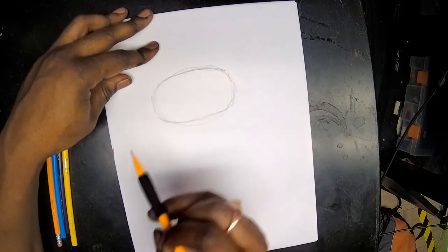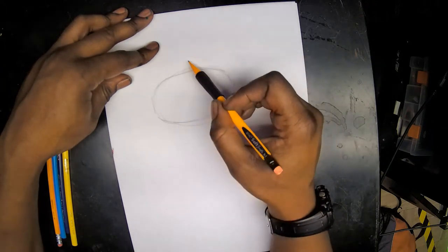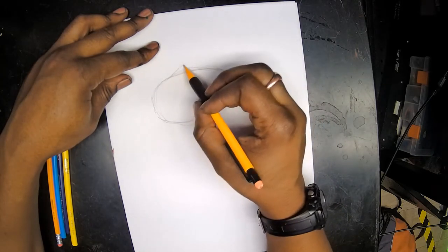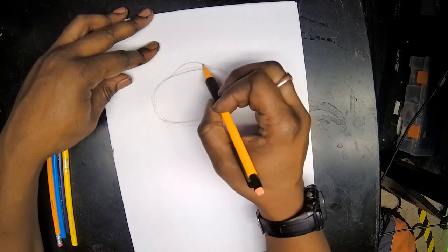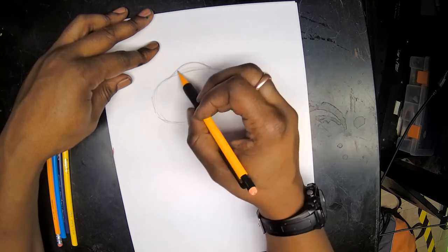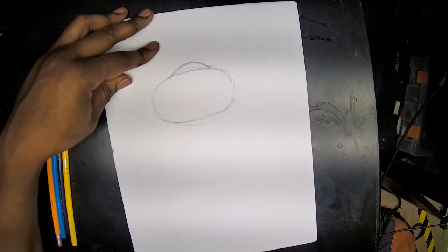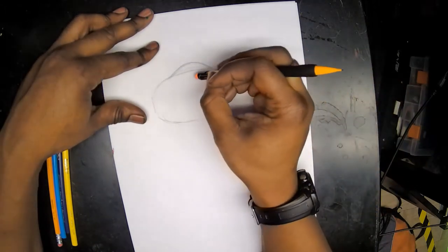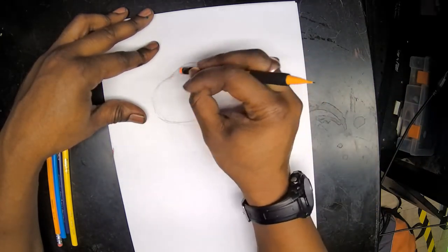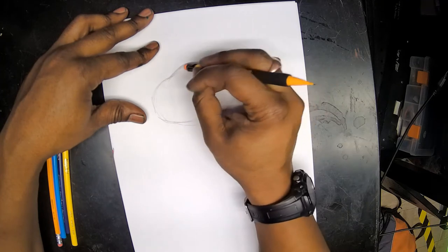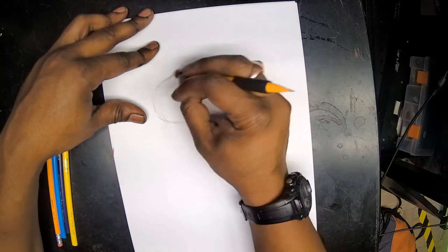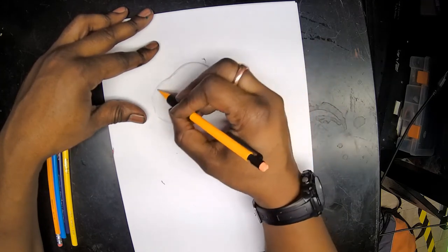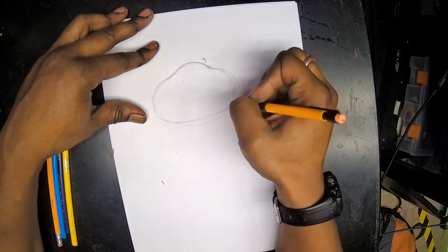Once you've lightly made an oval shape you like, towards the top we're going to give it a curved line to give it just a little bit of a peak or hill shape on the top. Once you have that done, you can erase where that meets your original oval.